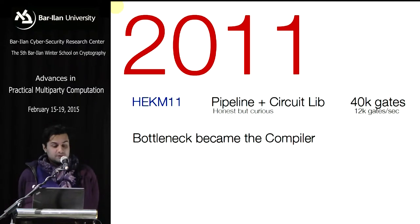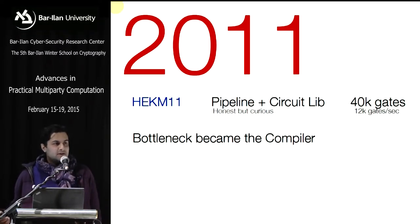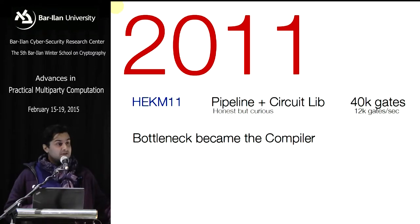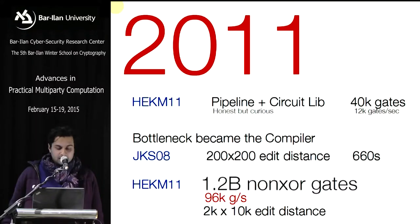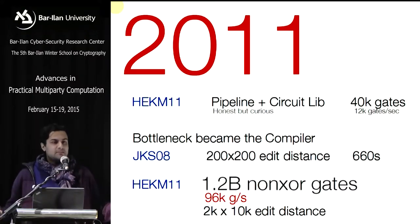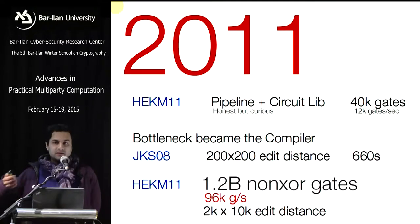Finding the right circuit representation is an open question. There are several techniques: boolean circuits, ORAM, and the algorithmic approach Muthu will discuss Thursday. This work handled circuits with billions of gates in the honest-but-curious model — the billion-gate circuit was an edit distance computation representing a DNA secure computation.